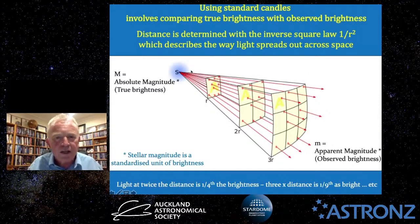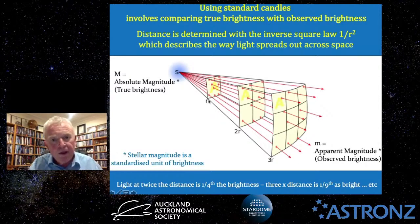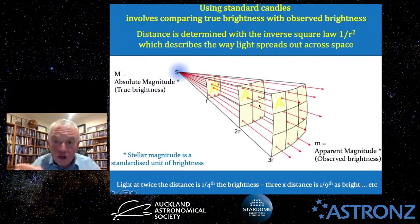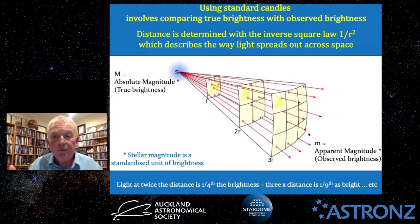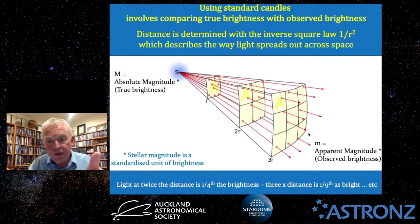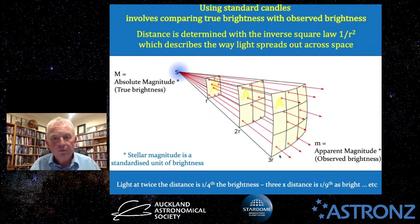Using standard candles means comparing the true brightness with the observed brightness using what's called the inverse square law, or 1 over R squared. If a light source of known brightness is at distance R, at twice the distance (2R) the light must spread over four times the area, making it four times dimmer. At three times the distance, it spreads over nine times the area — nine times dimmer. Many things in astronomy use this law to measure how signals get weaker with increasing distance.